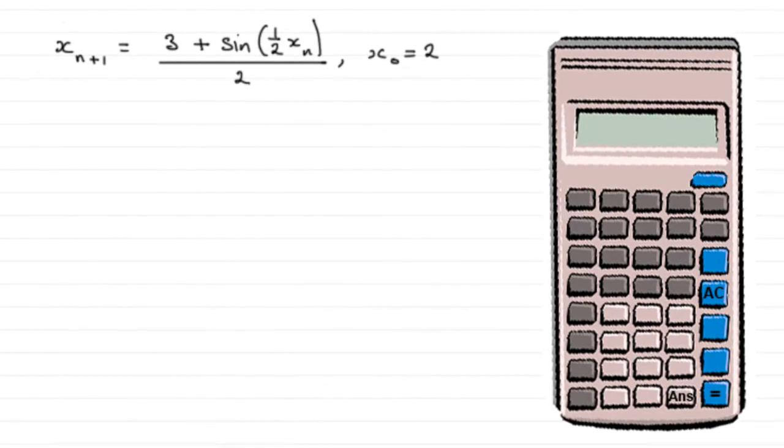Now for this part of the question we're given this iterative formula where x₀, our first approximation, is 2, and we've got to find out the next three approximations x₁, x₂, and x₃, giving our answers to three decimal places.